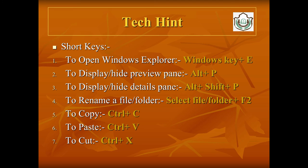Here are some shortcut keys for commonly used functions: Cut — Ctrl+X; Paste — Ctrl+V; Copy — Ctrl+C; Rename a file or folder — select the file or folder then press F2; Display or hide the Details pane — Alt+Shift+P; Display or hide the Preview pane — Alt+P; Open Windows Explorer — Windows key+E.